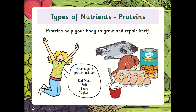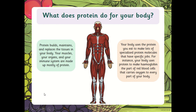Proteins are important because they help your body to grow and repair itself. There are beans, red meat, eggs, and fish as examples of protein. What exactly do we mean by grow and repair? Protein builds, maintains, and replaces the tissues in your body — your muscle tissue, skin, your muscles, your organs, and your immune system.